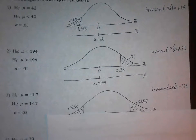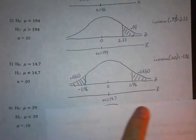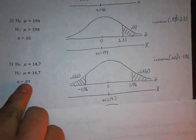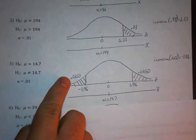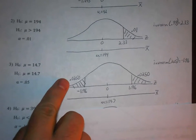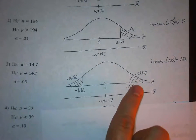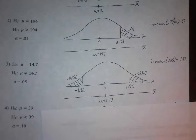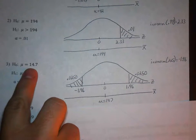The next example has a not-equals alternative hypothesis, so we're shading on both ends. Divide alpha by 2 because we have to split it into both ends: 0.05 divided by 2 is 0.025. When you do the inverse norm on that, you get negative 1.96, and because of the symmetry of the normal curve, positive 1.96 is the other z-score. We're assuming the population mean was 14.7 because that's what the null hypothesis told us.